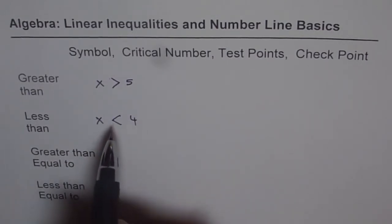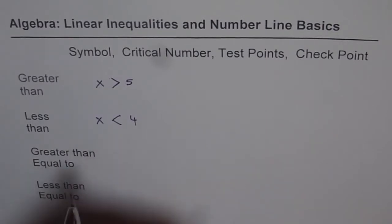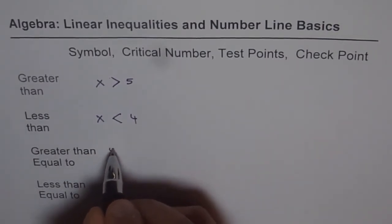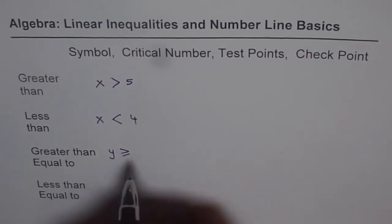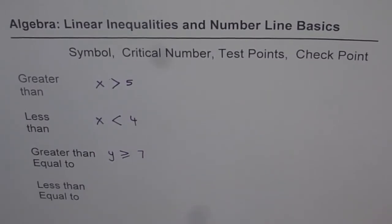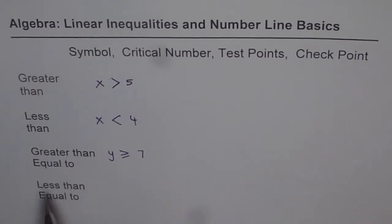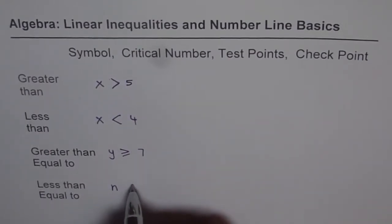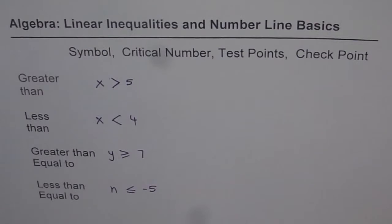You can also combine greater than and less than with an equal to sign. For example, I could write y is greater than or equal to 7, so the y value is 7 or more. Remember, the variable could be anything — x, y, z, a, b, c, d — not always x. For less than or equal to, consider a number less than or equal to minus 5. You could have positive numbers, negative numbers — any number on that side of the inequality.